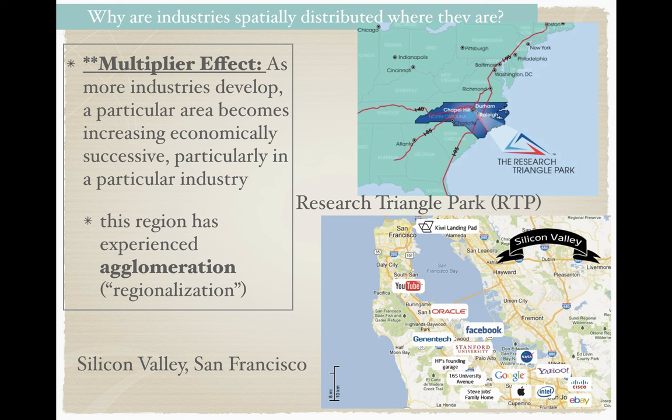The first thing is something I forgot to mention in the last video when I was discussing agglomeration — why it is that businesses seek, or similar industries seek to locate near one another. When agglomeration starts to occur, when one industry comes into a different location and another business in the same general industry also moves into a given area, what that starts is something called the multiplier effect.